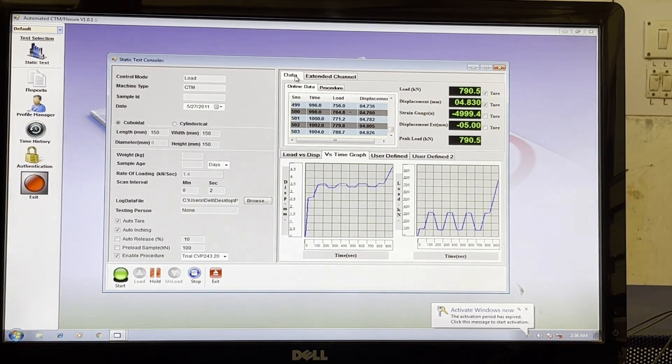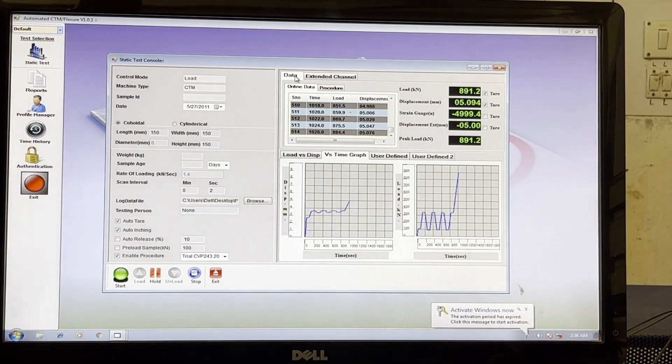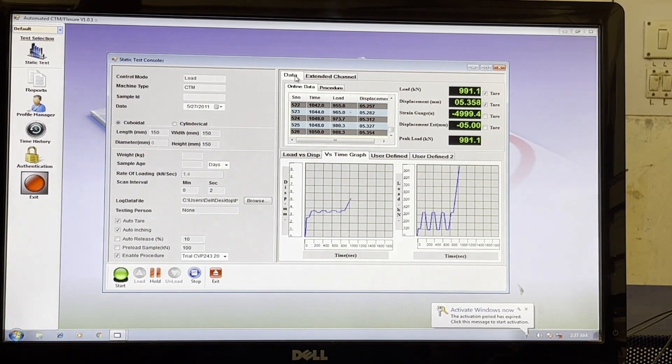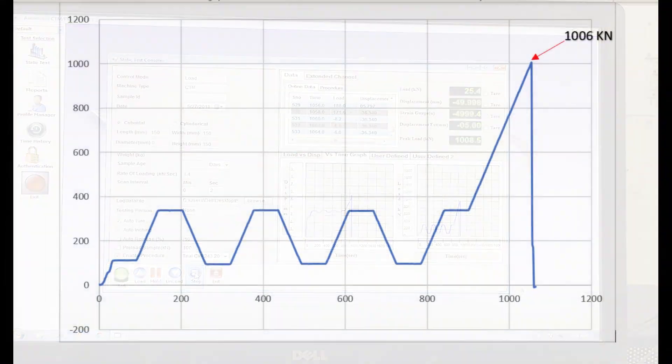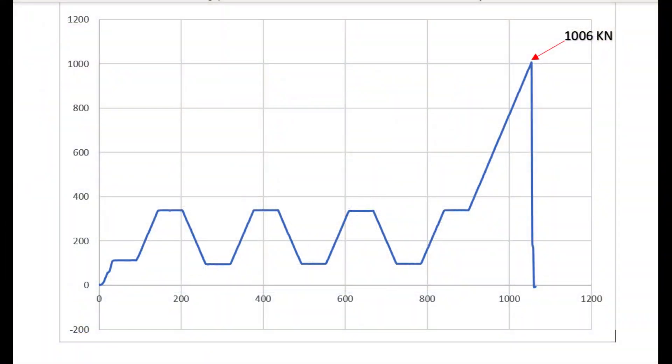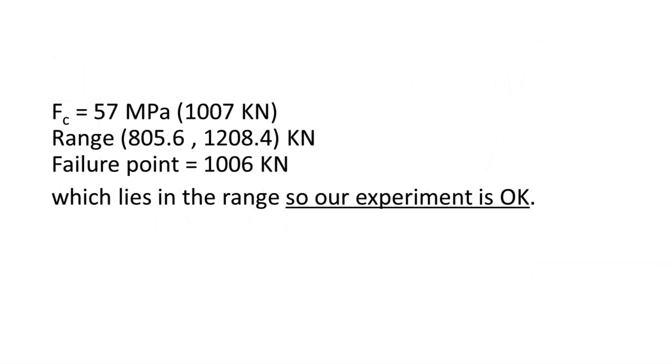When all elasticity measurements have been completed, the load on the test specimen shall be increased at the specified rate until failure of the specimen occurs. Check if stress at failure is within a range of plus or minus 20% of FC. If not, this shall be noted in the test report, and it shall be reported that the results may not be reliable.